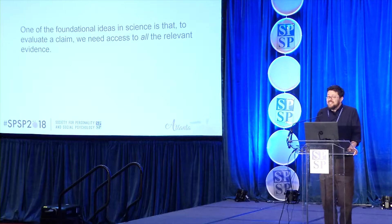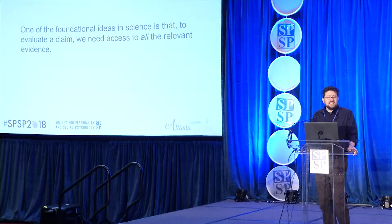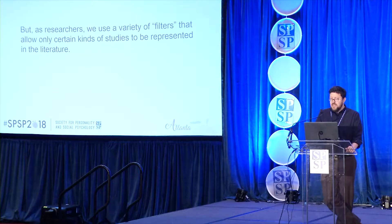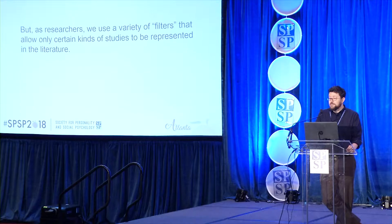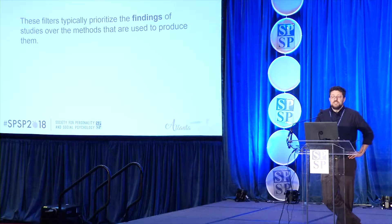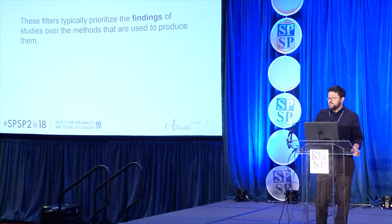One of the foundational ideas in science is that to evaluate a claim, we need to have access to all of the relevant information and all the relevant evidence. But as researchers, or as reviewers and editors, we use a variety of filters that allow only certain kinds of studies to be represented in the literature. These filters typically prioritize the findings of studies over the methods used to produce them.